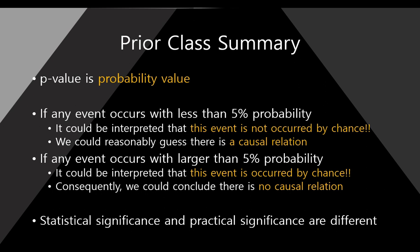The p-value is a probability value. If any event occurs with less than 5% probability, it could be interpreted that this event is not occurred by chance. So we can reasonably guess there is a causal relationship. However, if an event occurs with larger than 5% probability, it could be interpreted that this event occurred just by chance. Consequently, we can conclude that there is no causal relationship.